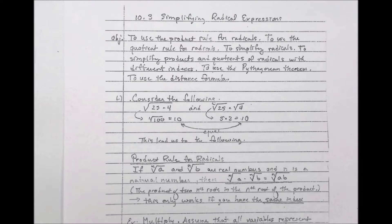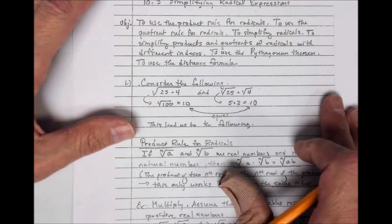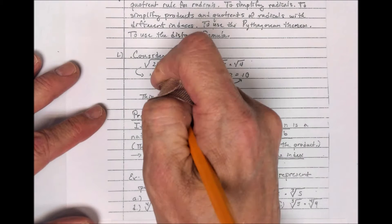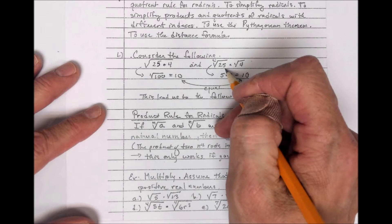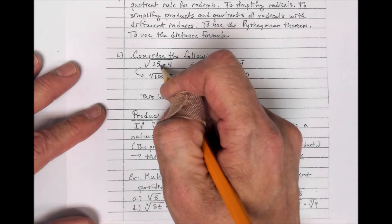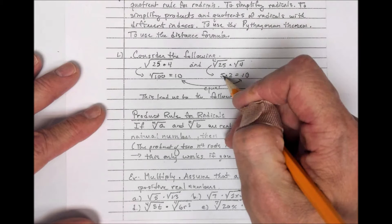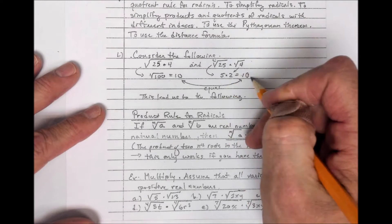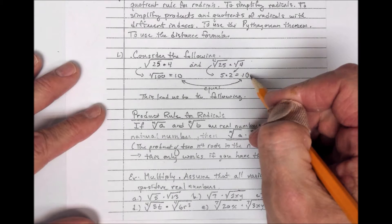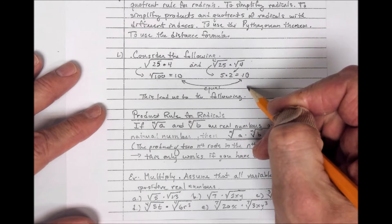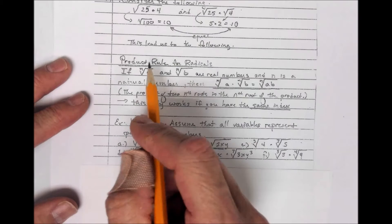Consider the following problem. The square root of 25 times 4: 25 times 4 is 100, and the square root of 100 is 10. Over here, the square root of 25 is 5, the square root of 4 is 2, and 5 times 2 is 10 — we get the same answer. Now, we can say this with confidence because we have the product rule for radicals.